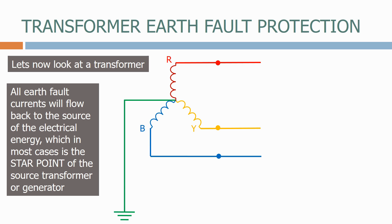All earth fault currents will flow back to the source of the electrical energy, which in most cases is the star point of the source transformer or generator.